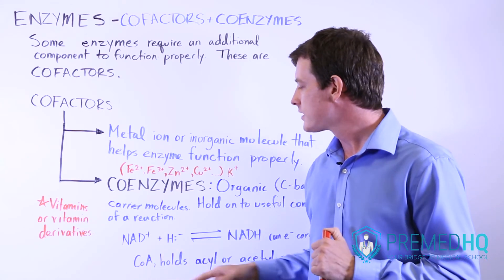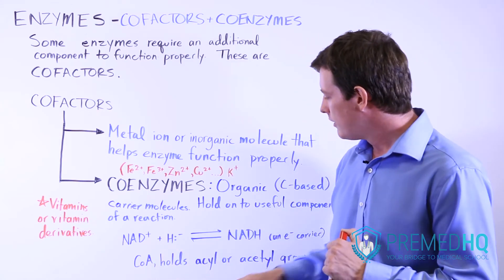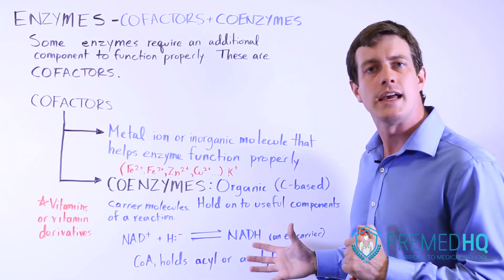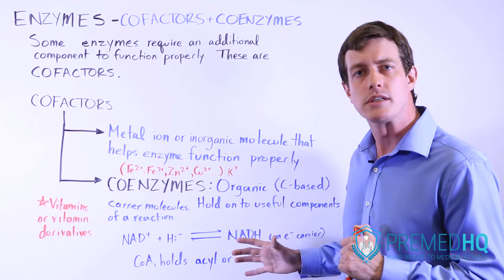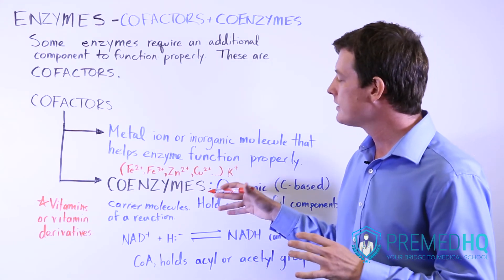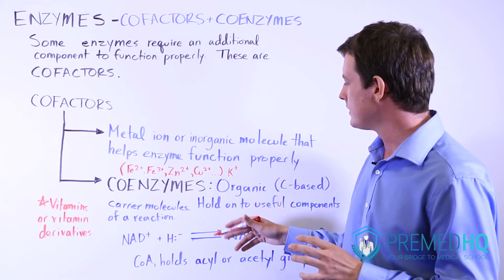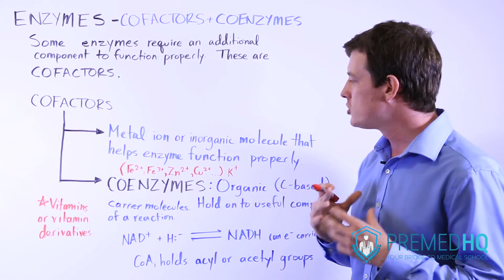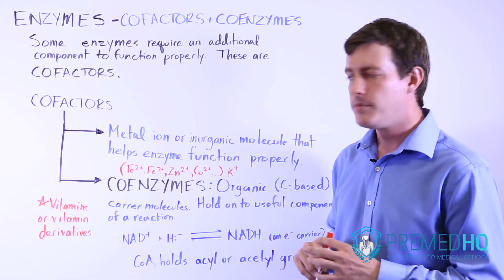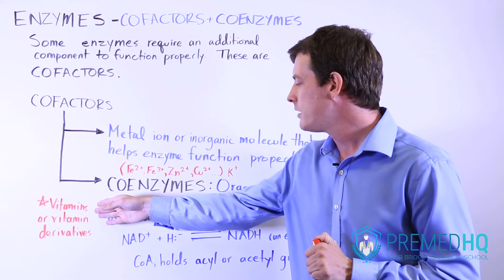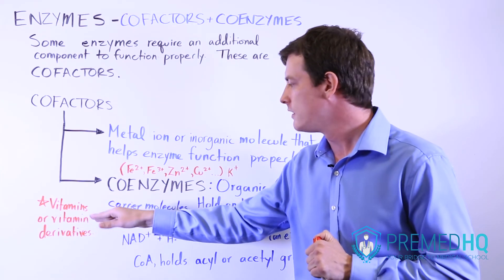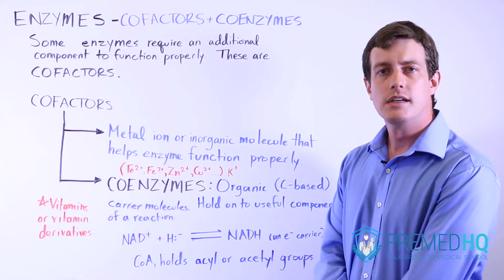Another common coenzyme is Coenzyme A, which holds on to acyl or acetyl groups in metabolism. The key thing to realize about coenzymes is that they are organic and their job is to carry things. Oftentimes they will be a vitamin or a derivative of some type of vitamin product.